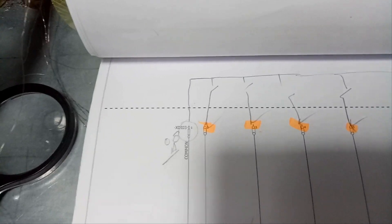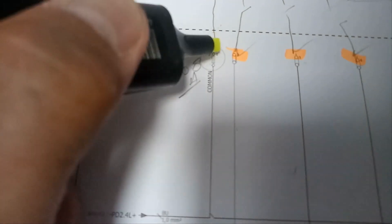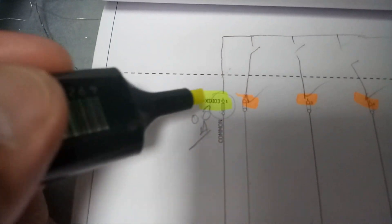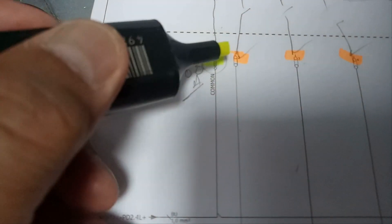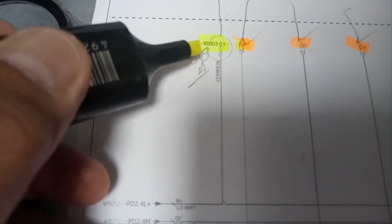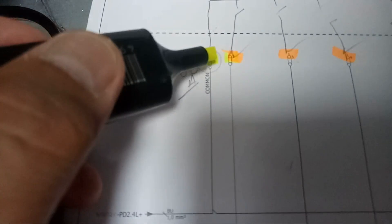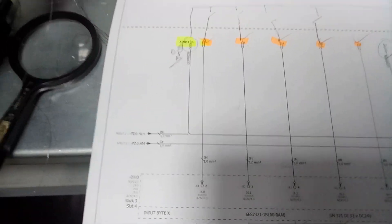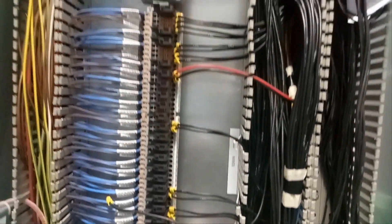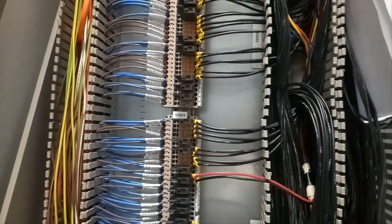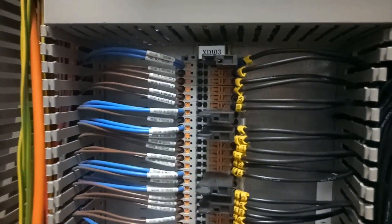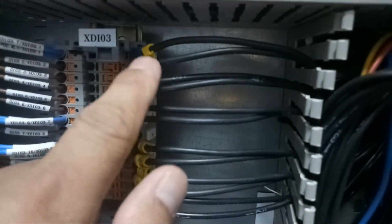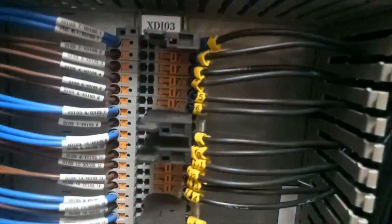I-highlight natin ito. Medyo taglamig po rito ngayon kaya medyo sinisipon tayo. Ayan po yung XDI03. So ang terminal point po niya dito ay number 1 — number 1 po yung pinaka-common — at ito naman po yung number 2. So DI03, 1 and 2. Terminal block po ito, number 1 and number 2. Diyan po nakakonekta yung local mode natin o manual mode. So titignan po natin dito sa terminal point o terminal block nitong PLC — DI03, ang core tag number ng terminal block number 1 and 2. So ito po yung DI03 — ang terminal block number po niya ay number 1 and number 2. Connected na po siya.